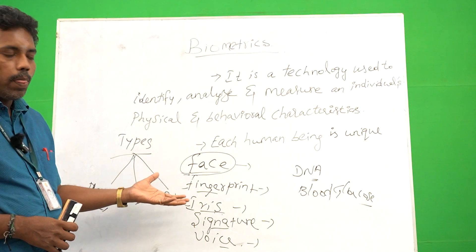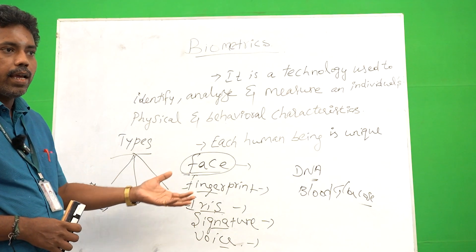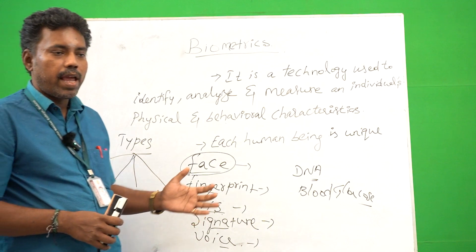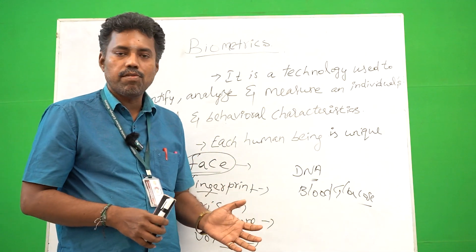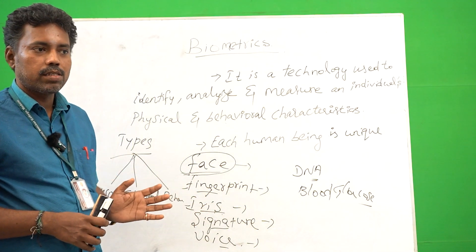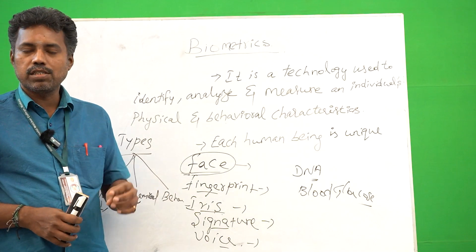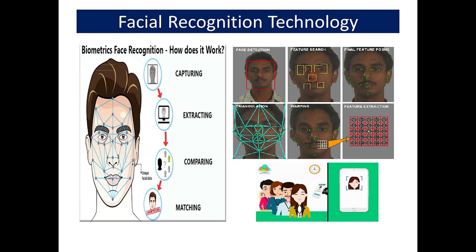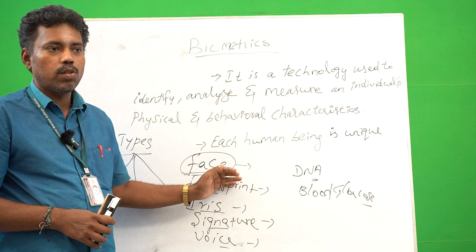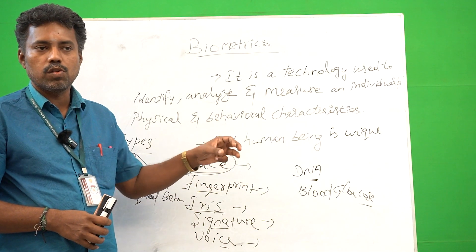How facial recognition systems work: the first step is capturing and scanning. The second is extracting the facial data. The third is comparing against the database. Then matching and identifying. This is the way we identify the face. A facial recognition algorithm is also involved.